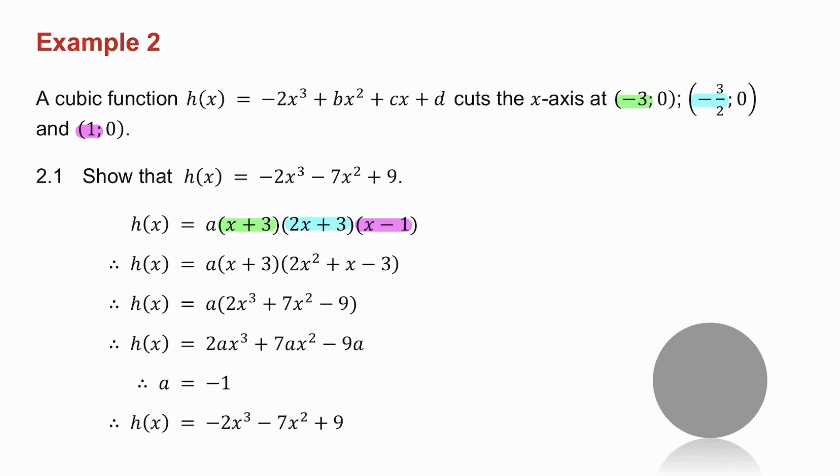Notice I must put an 'a' outside the brackets. Multiply two of the brackets together, multiply the third bracket in, and multiply the a in. Now you will notice that they told you you had a minus 2x³, so if this must be a minus 2x³, what must a be equal to? a must be minus 1. So substitute a is minus 1, and you get the equation of h(x) which they asked you for.